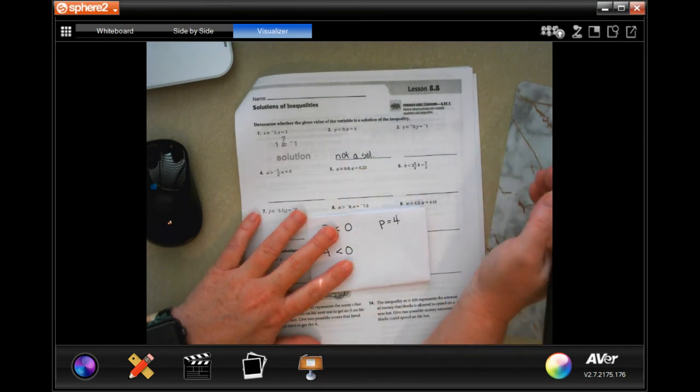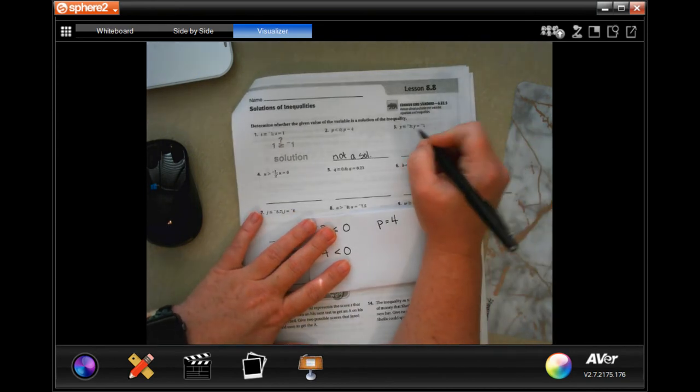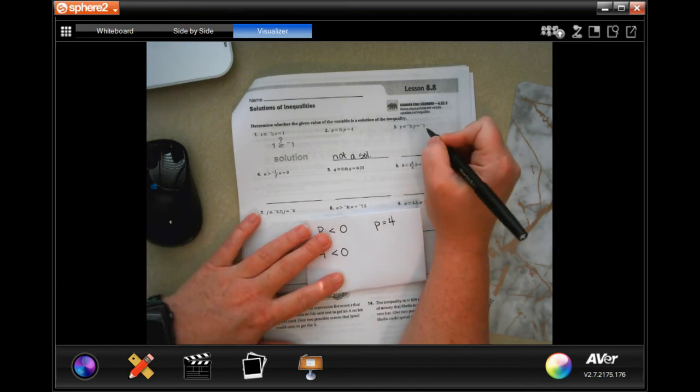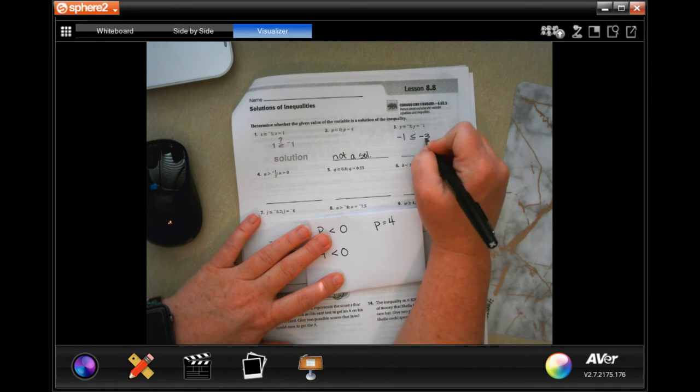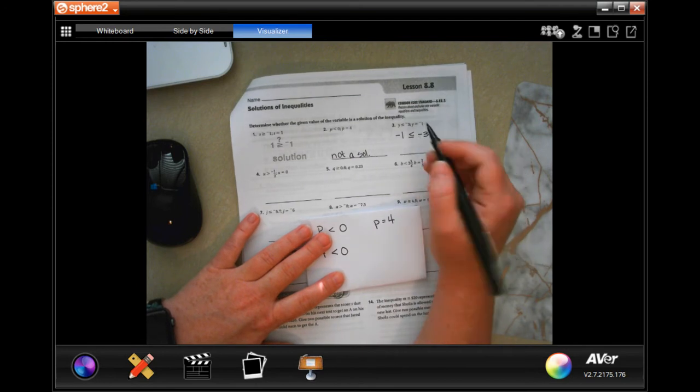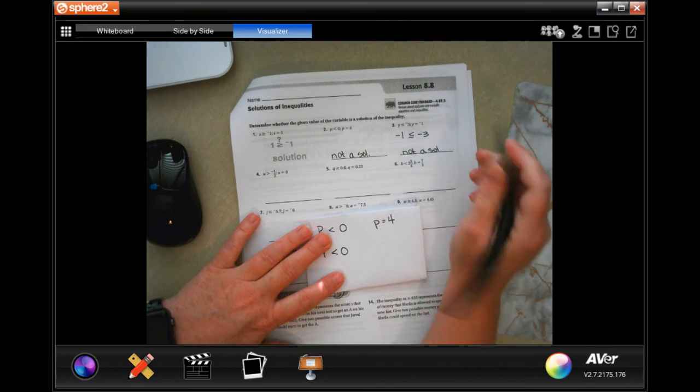All we have to do is solution or not a solution, guys. This says that y is less than or equal to negative 1. So that's saying negative 1 is less than or equal to negative 3. Well, when you're dealing with negative numbers, the closer to 0 you are, the bigger the number is, which means this one is bigger, not a solution.